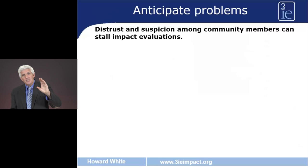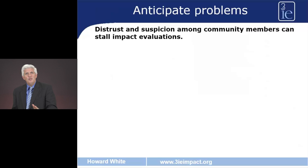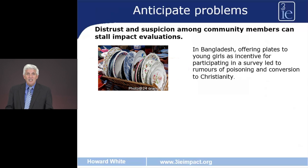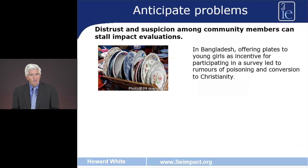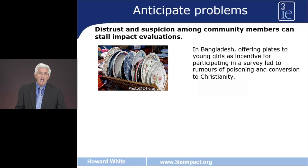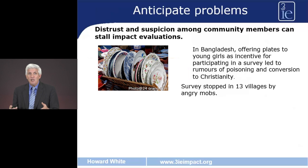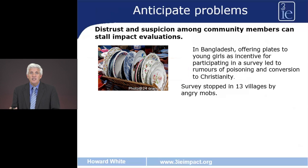You need to anticipate problems that may occur in the project that could undermine the study. There is often suspicion and distrust amongst intended beneficiaries about the true intentions of those carrying out the project. For example, in Bangladesh, where the study team gave plates to girls taking part in a survey, there were rumours in the villages that these plates were poisoned, and further rumours that the study team were trying to convert the girls to Christianity. The result was that in 30 villages, study teams were confronted by angry mobs and couldn't carry out the surveys needed for the study.